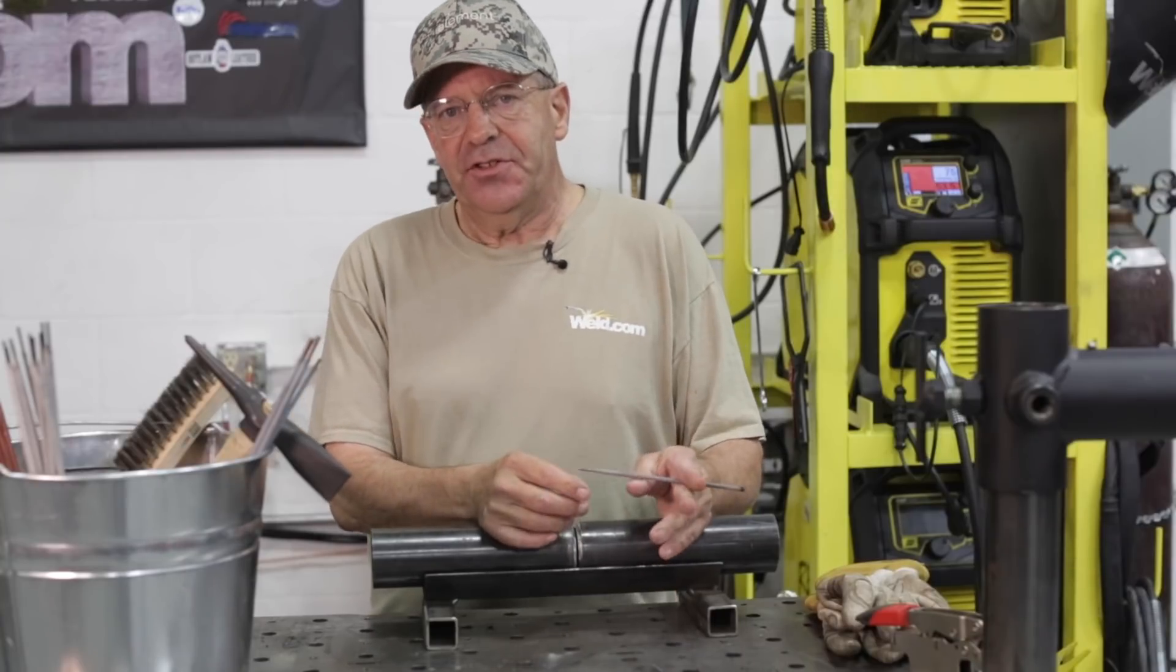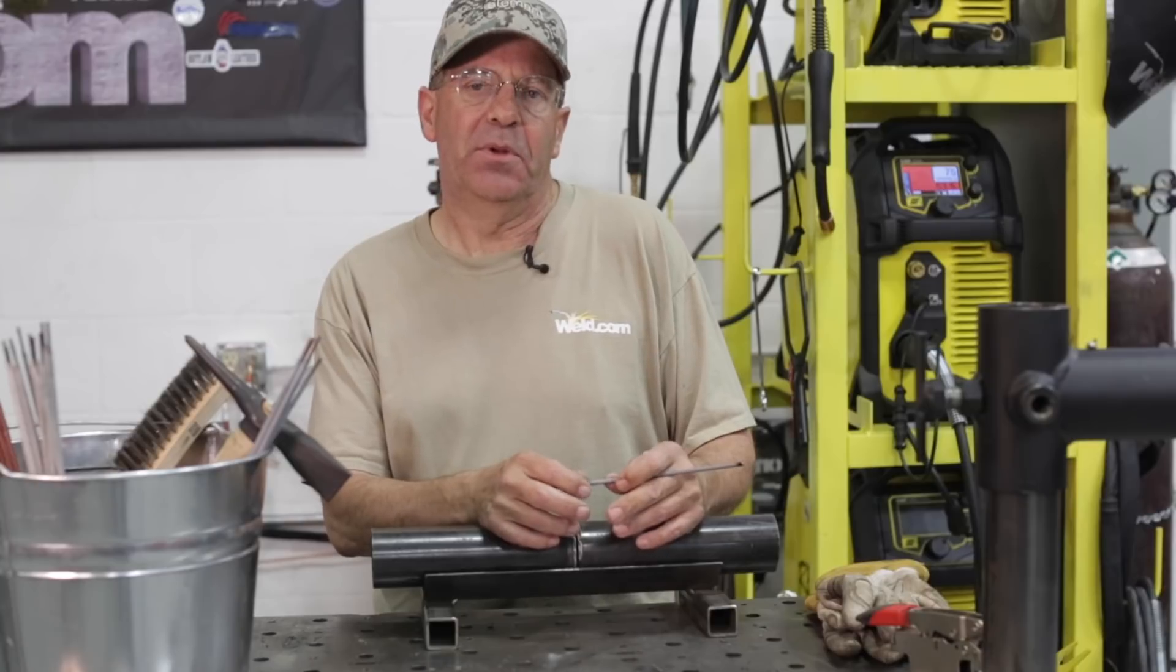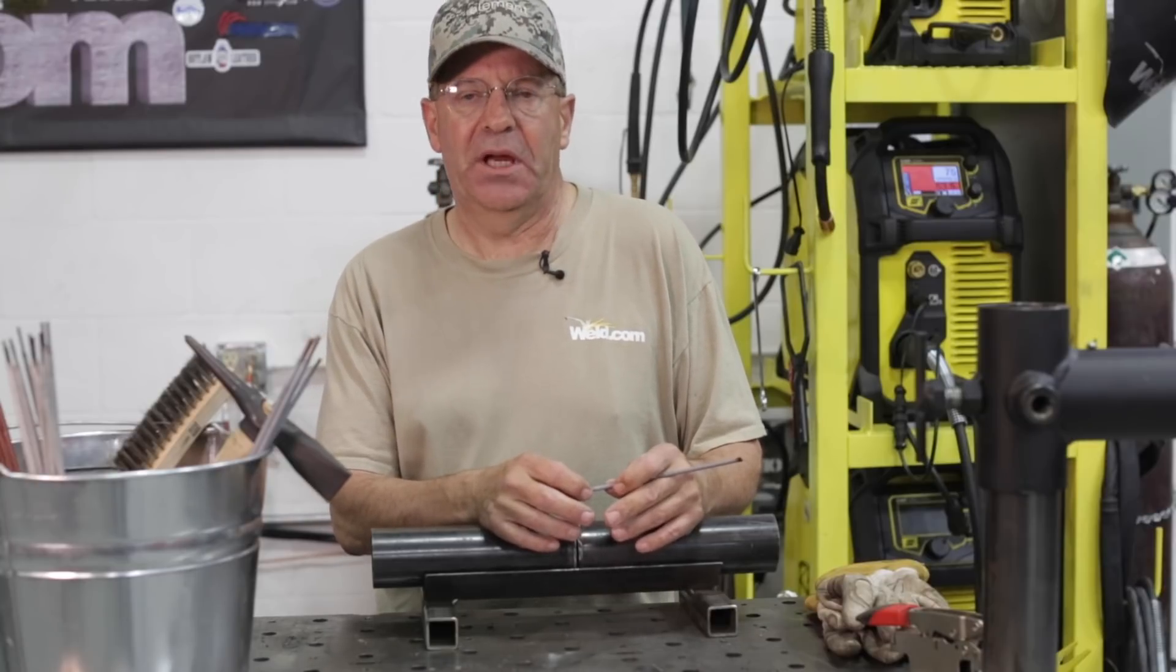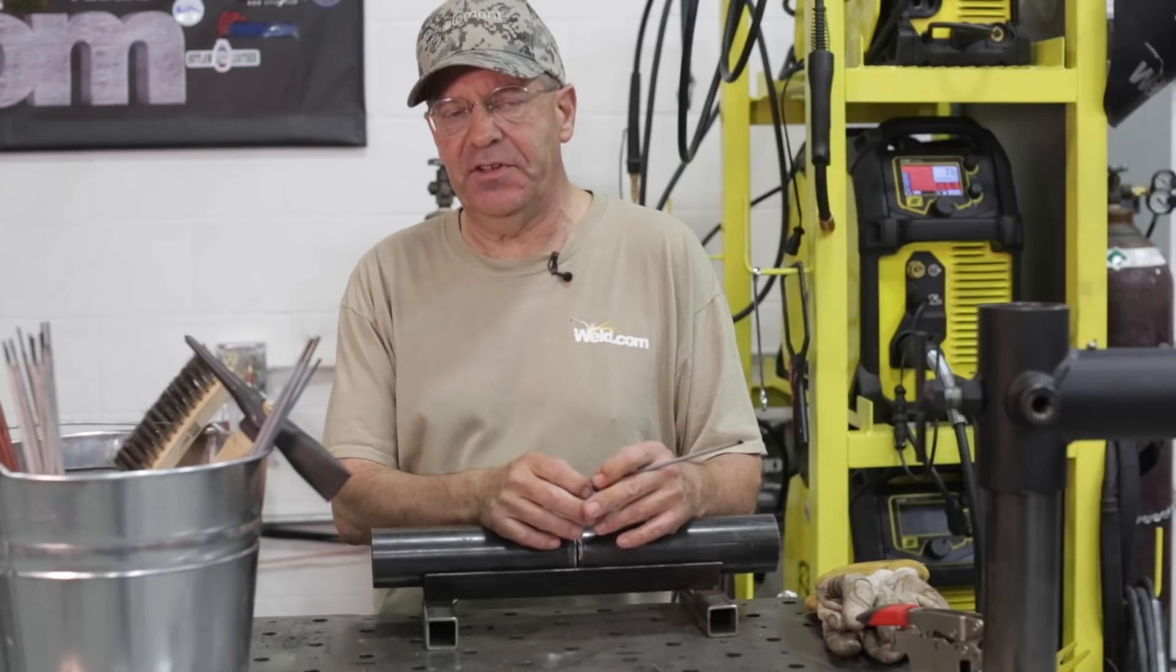I'm going to be using 1/8-inch 6010 for the root. I'm going to clean the root out and run a little bit of a quick fill pass uphill. We're going to finish it out with 3/32nd 7018.